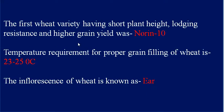The first wheat variety having short plant height, lodging resistance, and higher grain yield was Norin 10. It was the first variety with short plant height, lodging resistance, and high yield.